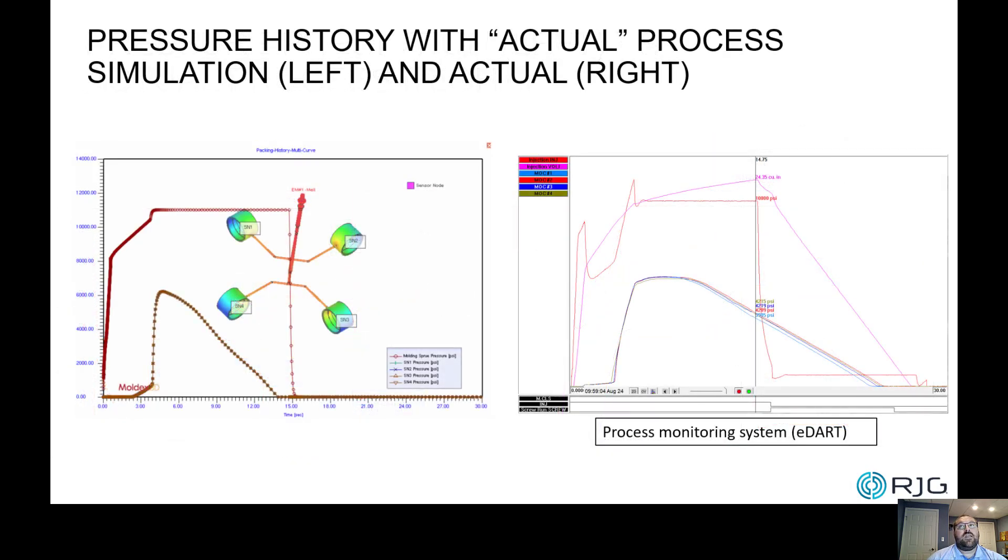We then entered the actual process parameters. The left was the updated simulation result, and the rest are the same as the previous slide. You may notice both cavity pressure histories still showed significant difference, which means we can't meet the part process. There are definitely other factors causing this discrepancy.